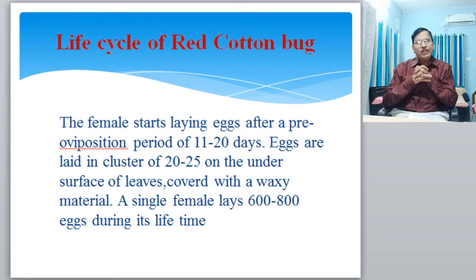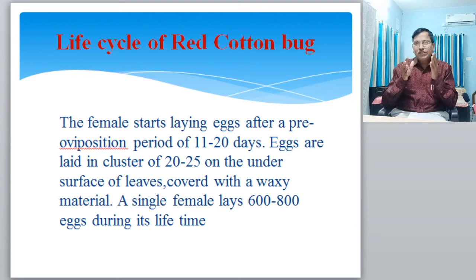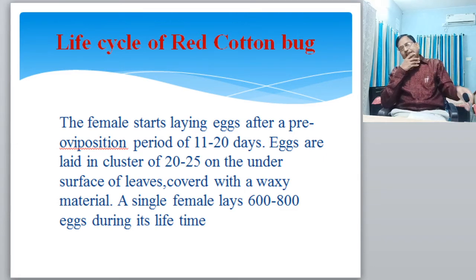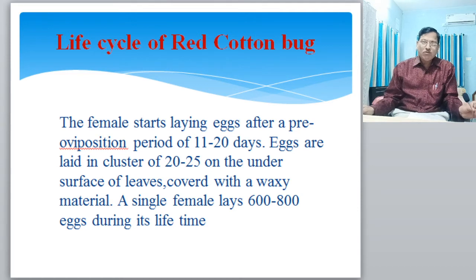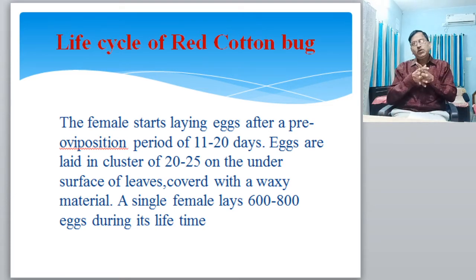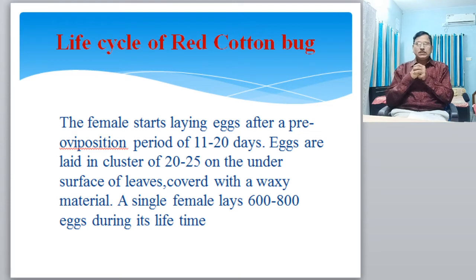The next point is the life cycle of the red cotton bug. Every animal's life cycle is completed in 3 to 4 stages. In red cotton bugs, the life cycle is completed through eggs, nymph — with 5 instars — and adult. This is an incomplete metamorphosis, as opposed to complete metamorphosis which has egg, larva, pupa, and adult stages.